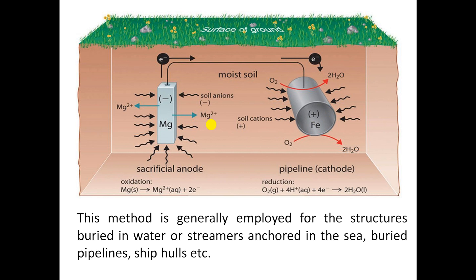The disadvantage of this method is that we lose the more active metal, so it has to be replaced periodically with a new one. The applications of the sacrificial anodic method include protection of oil tanks, ship hulls, and underground cables from corrosion.